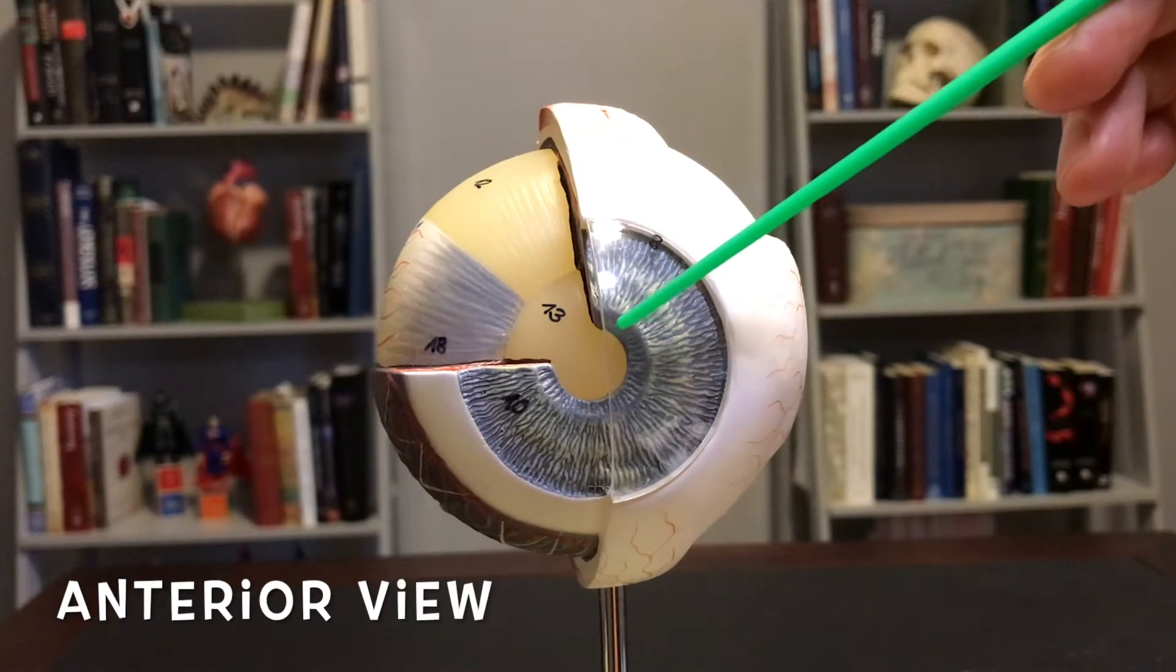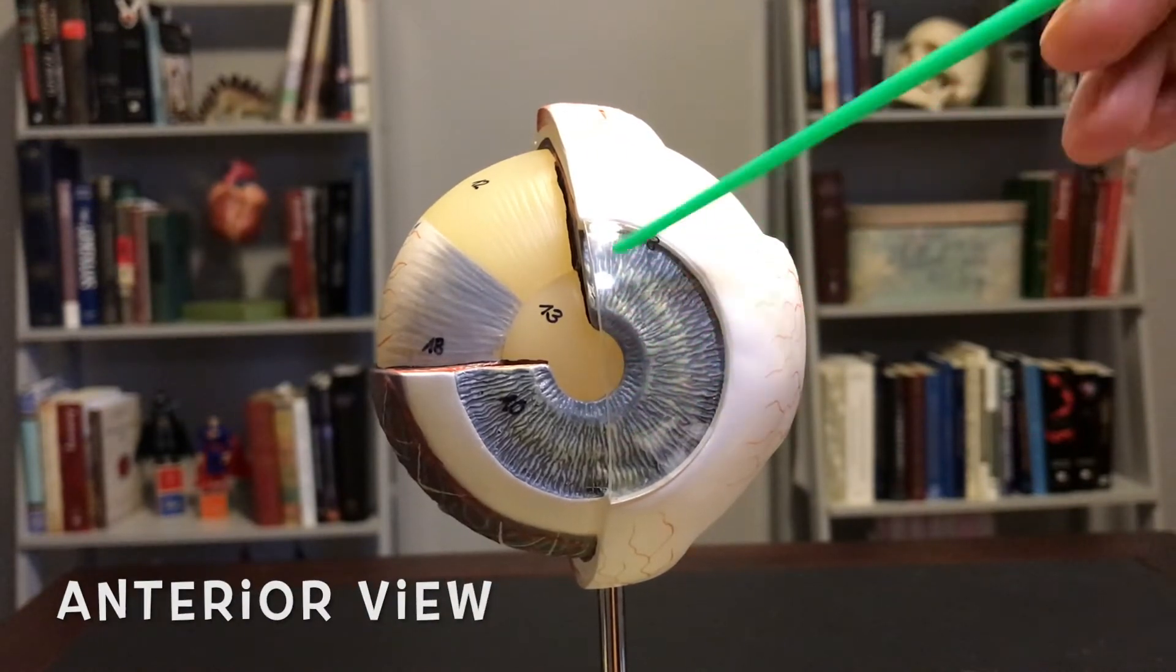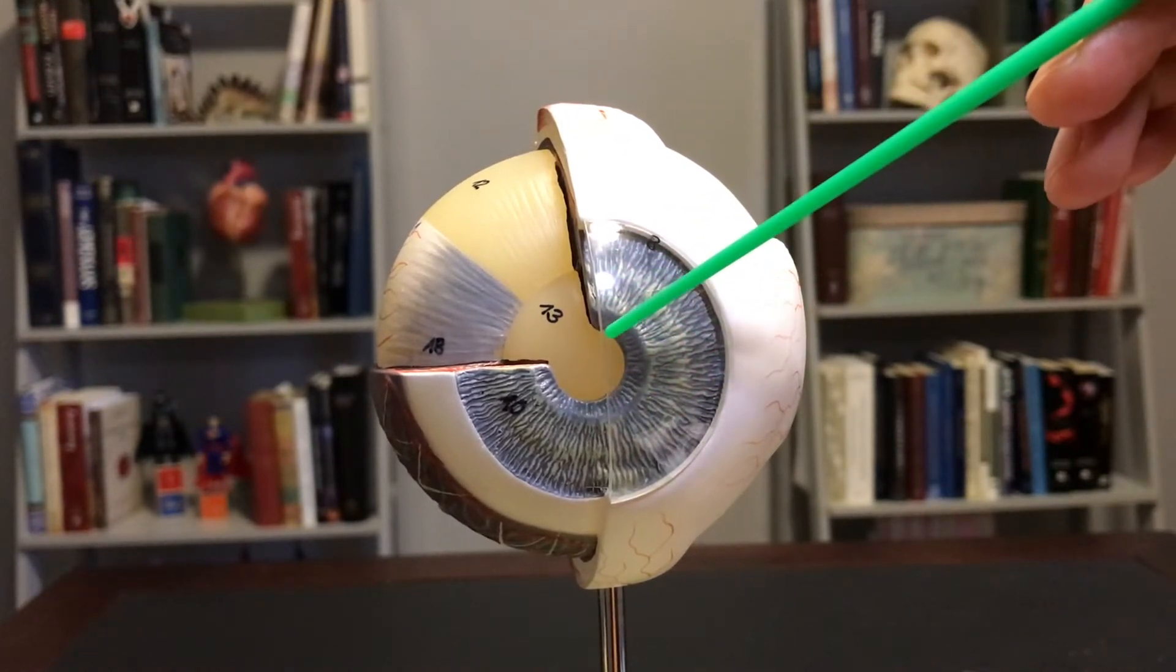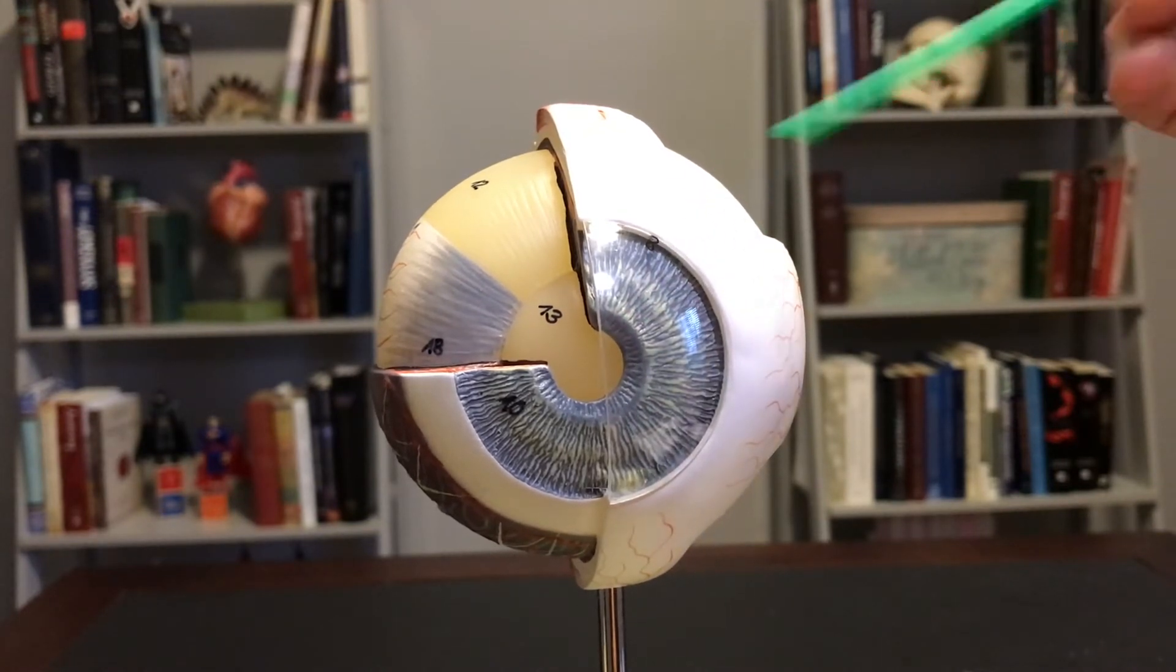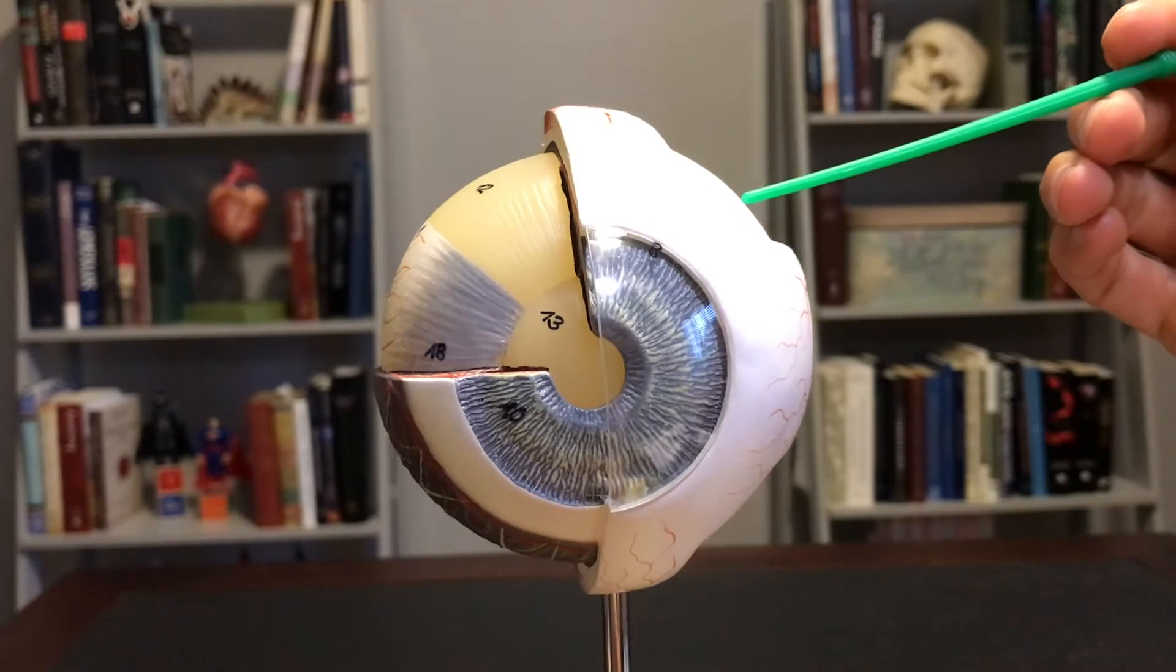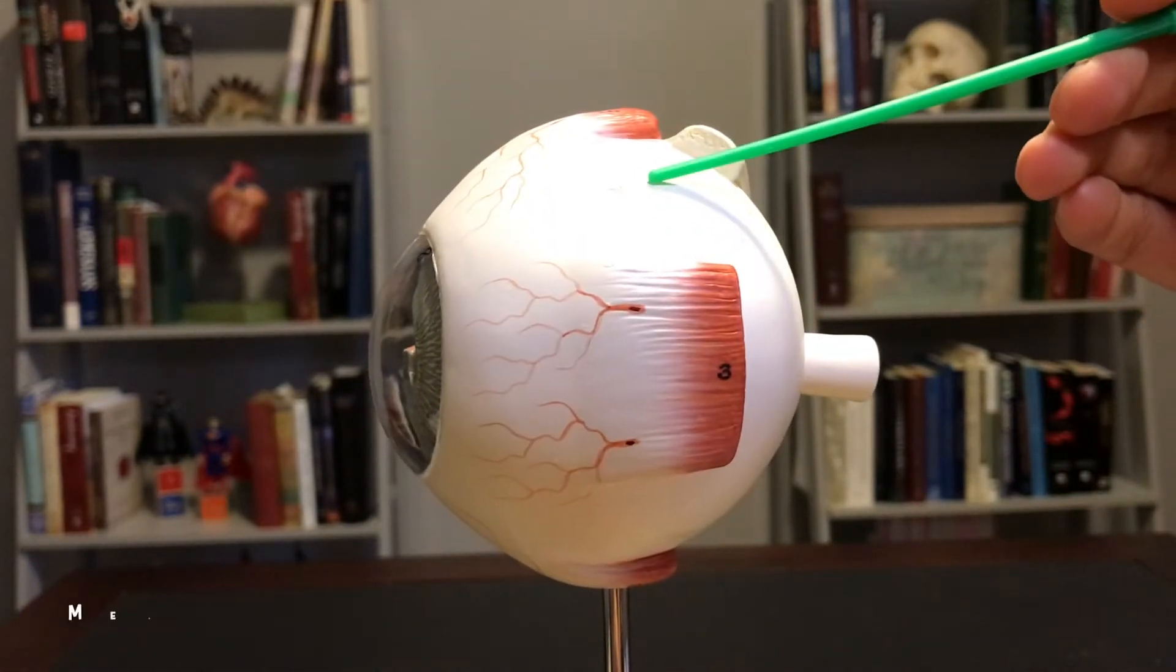What I'm tapping on right here is the cornea. That's the first structure that we see as we look anterior to the eye. If we go posterior to this, we run into the sclera. The sclera is the white part of the eye.